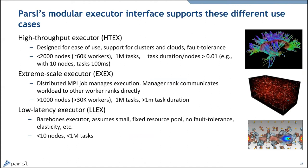The high-throughput executor is designed for ease of use, clusters, clouds, and fault tolerance — up to about 2,000 nodes, 60,000 workers, perhaps a million tasks. Task durations around a hundredth of a second work okay; below that it doesn't work well. The extreme-scale executor uses distributed MPI with a manager rank communicating workloads to other workers — above 1,000 nodes, maybe a million tasks, 30,000 workers, but tasks need to be larger than a minute to work efficiently. The low-latency executor skips fault tolerance but works very quickly, good for small node counts.